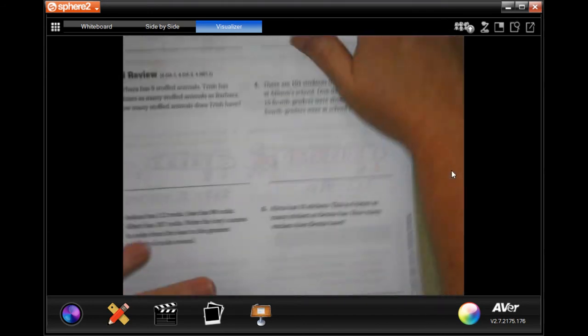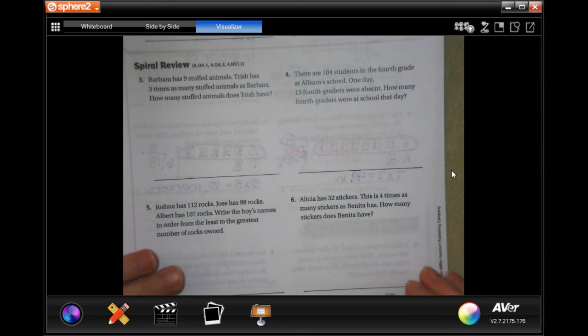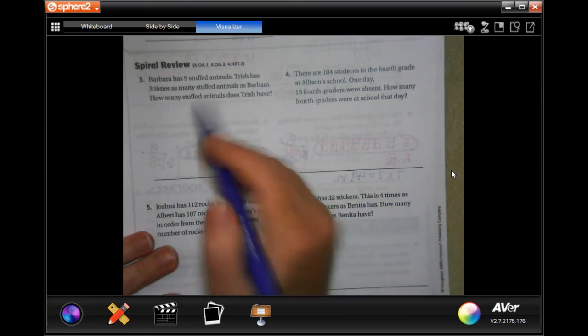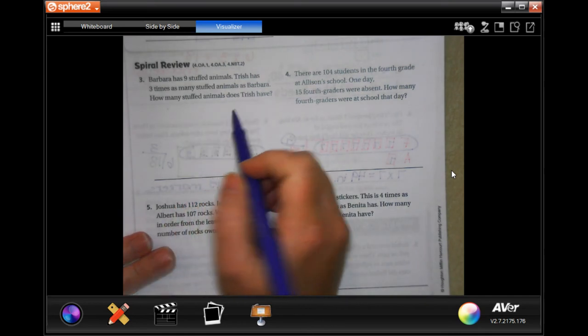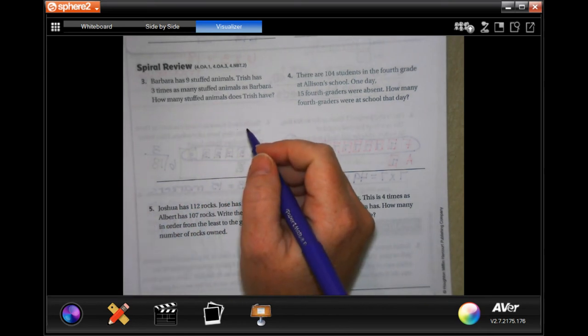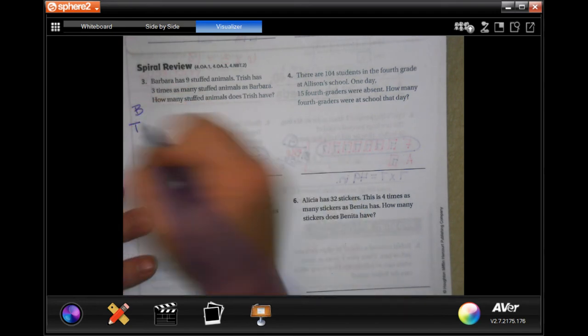We are going to do the thorough review to remember what we are looking for. Barbara has 97 animals. She has three times as many animals as Trish. How many does Trish have? Same thing guys. Barbara and Trish. Barbara has nine. We would have nine boxes.